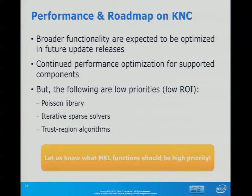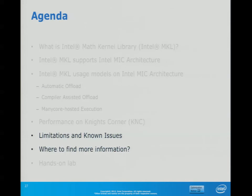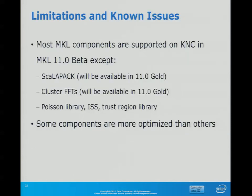These are items on the agenda for the MKL team — broader functionality, but also asking for your input. Some lower-priority items with lower return on investment include the Poisson library, iterative sparse solvers, and trust region algorithms. If you want to bump any of these up in priority, feel free to let us know. Some of the listed limitations and issues are already resolved or being resolved on the fly.